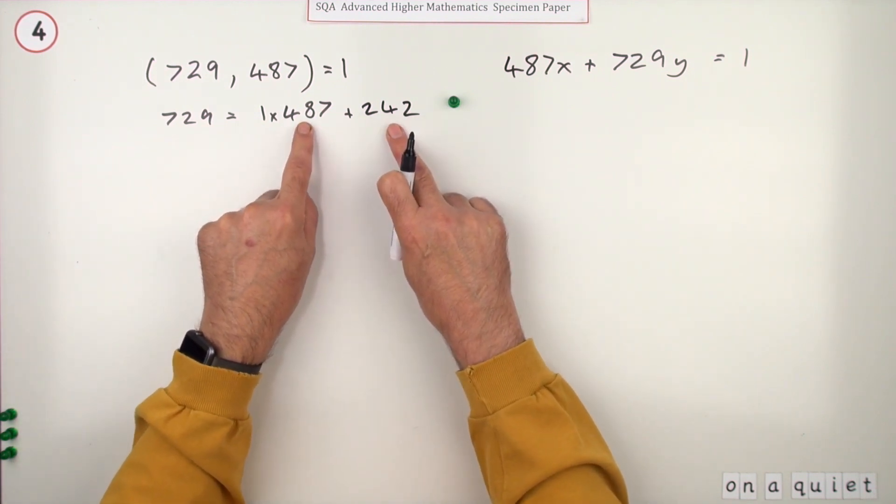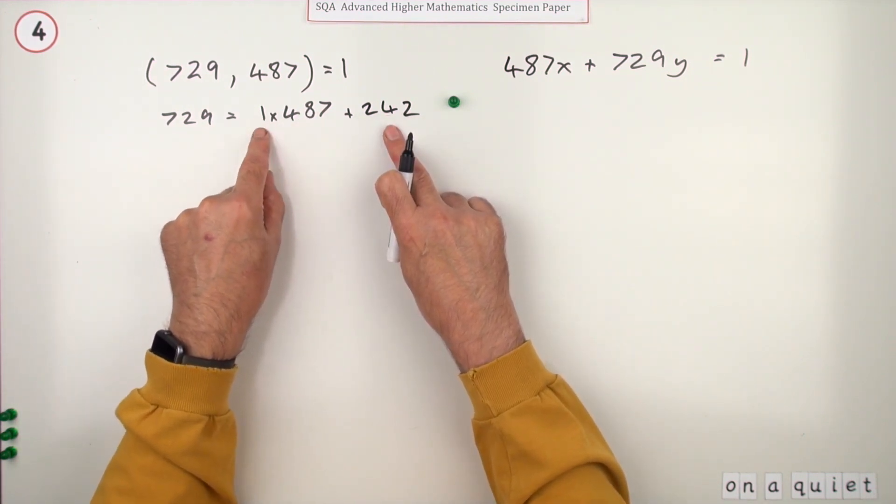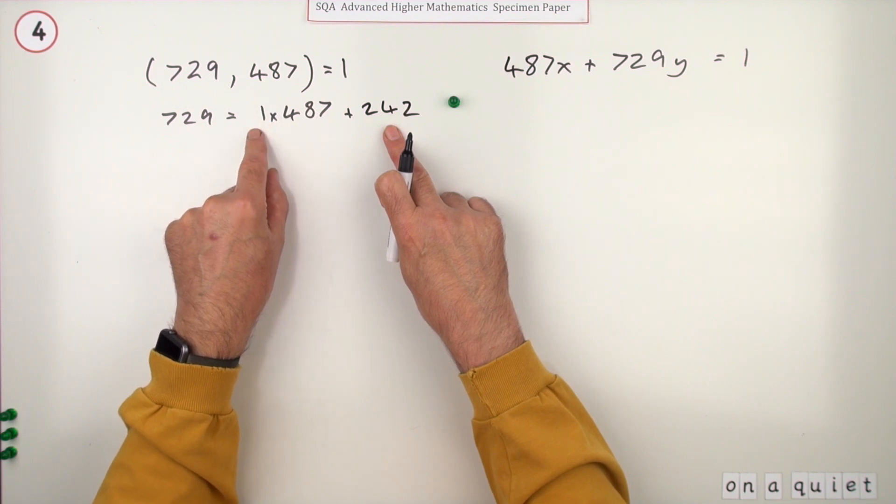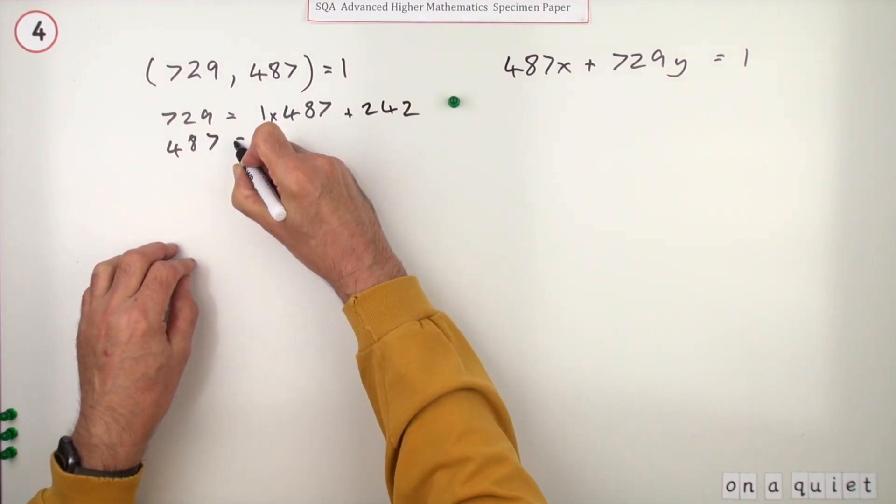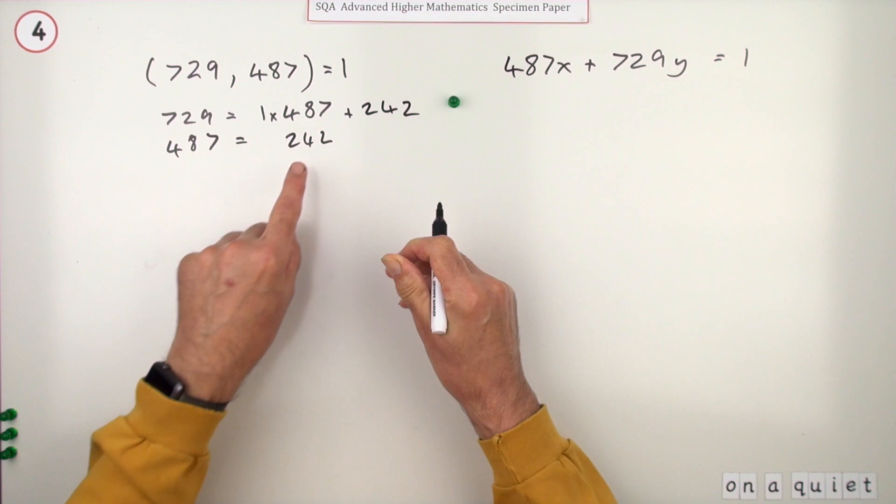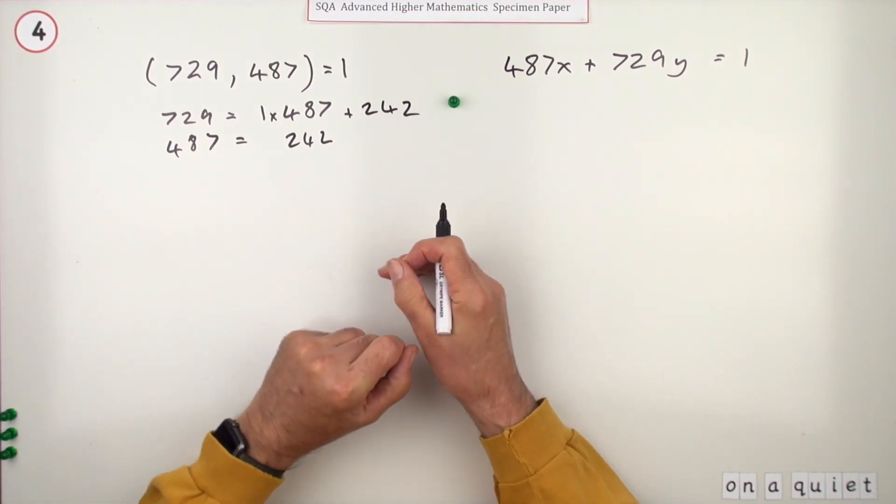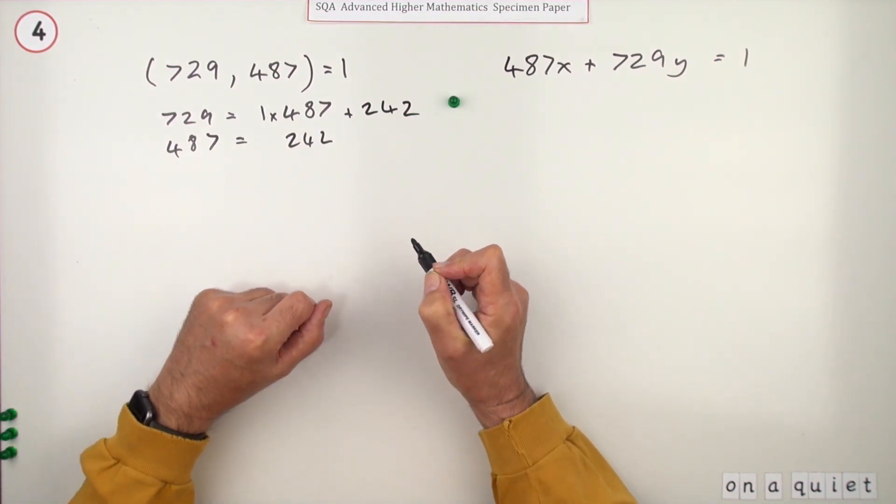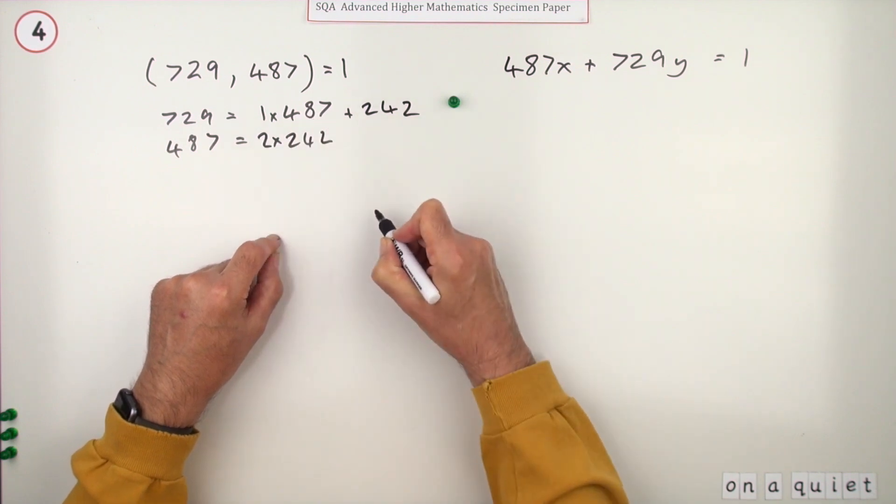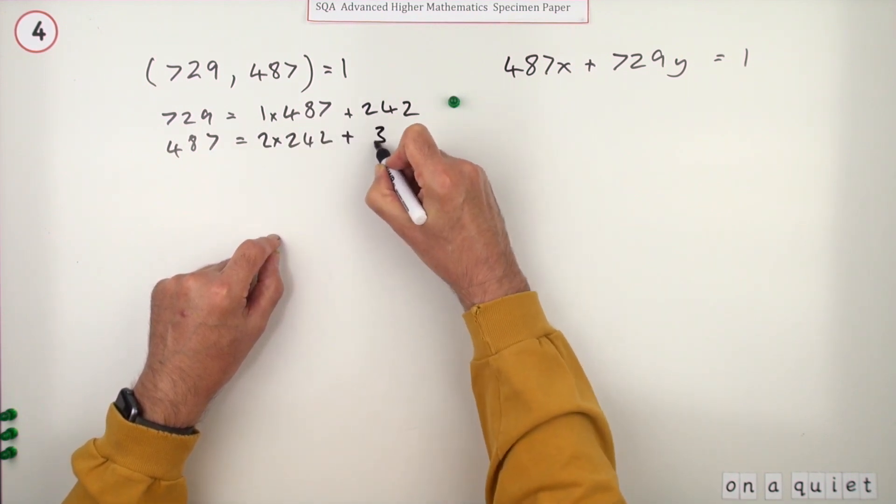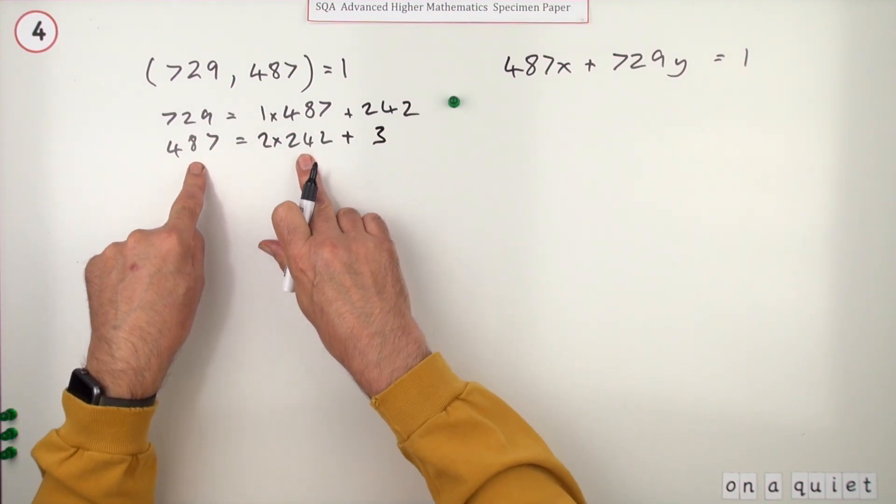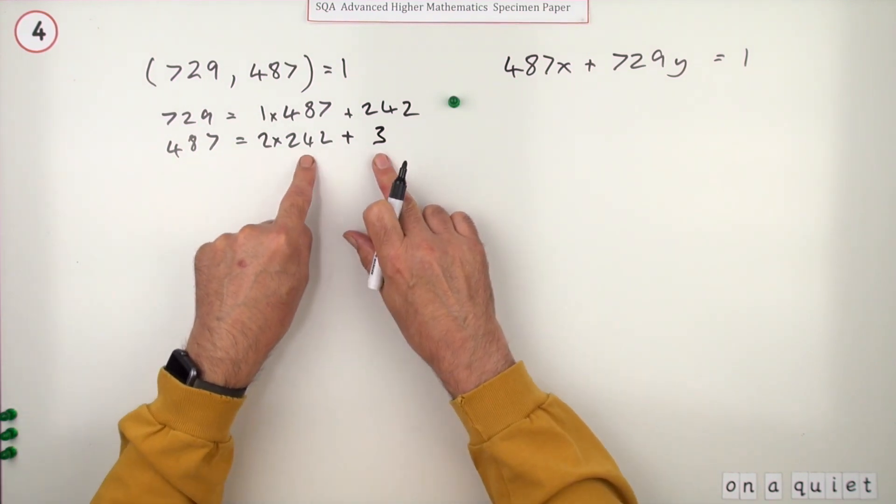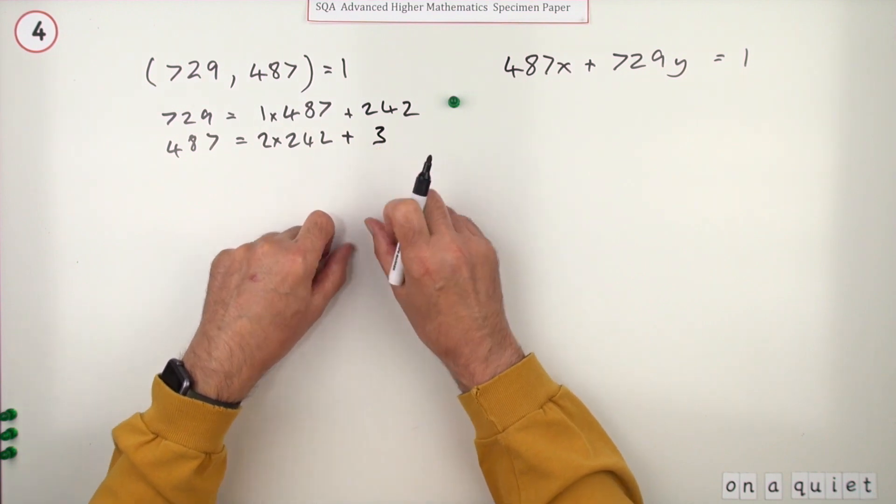So you start again with these two. The greatest common divisor must divide these two numbers. So 487, 242 - does that divide into that? Well you can get two of them this time, but you still got a remainder of 3. The same process applies: whatever divided into those two will also divide into these.